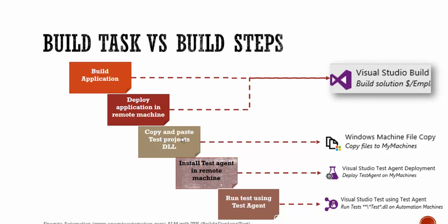Similarly, copying and pasting the test project DLL is done using the Windows Machine File Copy task. We also need to add the Visual Studio Test Agent Deployment and the Visual Studio Test Using Test Agent tasks. Let's quickly add each of them one by one.